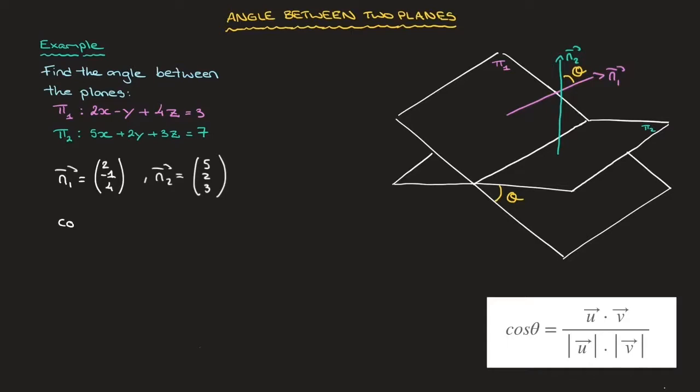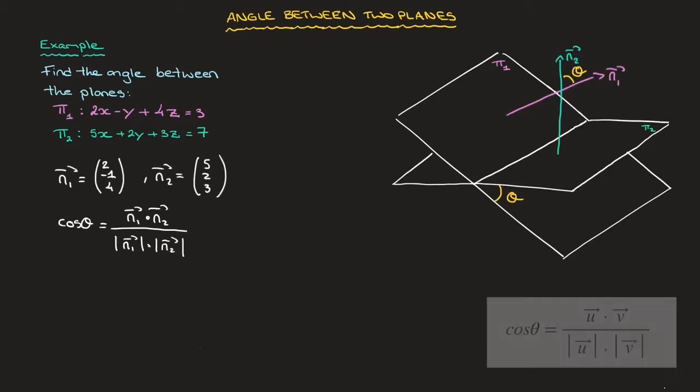Using that formula, we can state that cos(θ) equals the dot product of n₁ with n₂ over the product of their magnitudes. So that's the magnitude of vector n₁ and the magnitude of n₂. Calculating this,